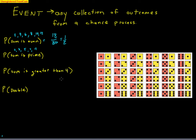The sum is greater than 4 — be careful: greater than 4 means strictly 5 or above, so 5, 6, 7, 8, 9, 10, 11, 12. Rolling a double is another example: you can get 1-1, 2-2, 3-3, 4-4, 5-5, or 6-6. There are 6 out of 36 ways to get a double. So the idea is that an event is a collection of outcomes, not simply just one outcome.